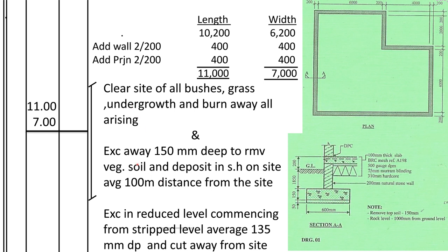We are told to excavate away 150 millimeters deep to remove vegetable soil. You remove the vegetable soil in the area that you have cleared to 150 millimeters deep. This soil after removal — the vegetable soil — we shall not use it to refill. We shall put it in a heap called 'cut away.' This soil shall be taken away from the site an average of 100 millimeters distance. If we need more soil from this heap, we return it to another heap called 'refill and ram.'